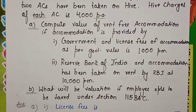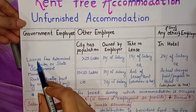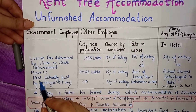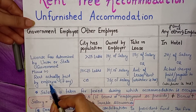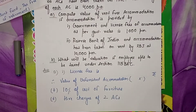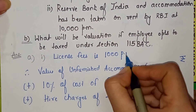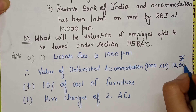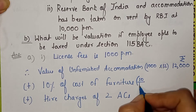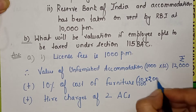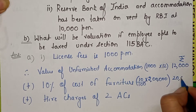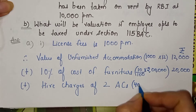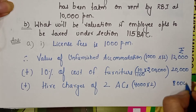As I told you in my last video, the rule for a government employee is that the value of unfurnished accommodation is the license fee — 1,000 per month, so 1,000 × 12 = 12,000. To this we add 10% of the cost of furniture since it is the employer's own: 2,00,000 × 10% = 20,000. The two ACs are taken on hire, so actual hire charges apply — 1,000 per month per AC, so 2,000 per month × 12 = 24,000... giving total hire charges of 8,000 for the period as computed.